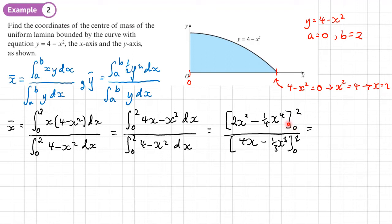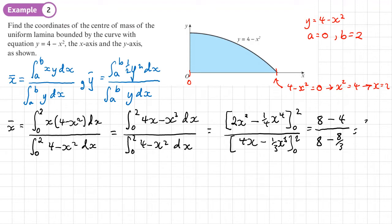Evaluating the top at x = 2: 2 times 4 equals 8, minus (1/4) times 16 equals 4, giving 8 − 4 = 4. For the bottom at x = 2: 4 times 2 equals 8, minus (1/3) times 8 equals 8/3, giving 8 − 8/3. Dividing these gives x-bar = 3/4.